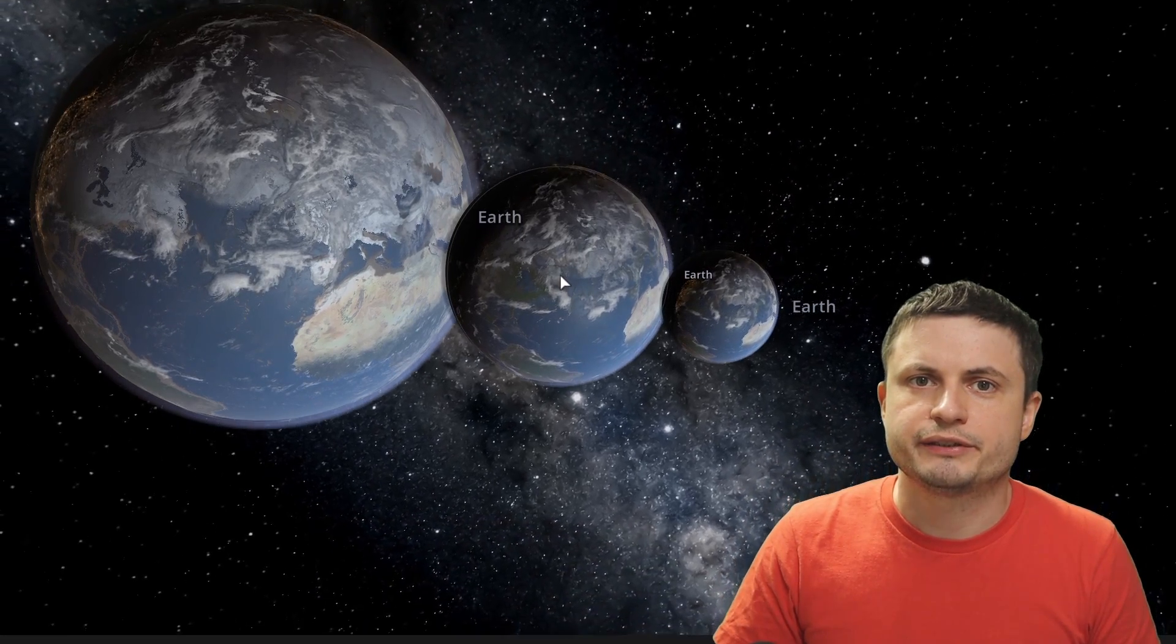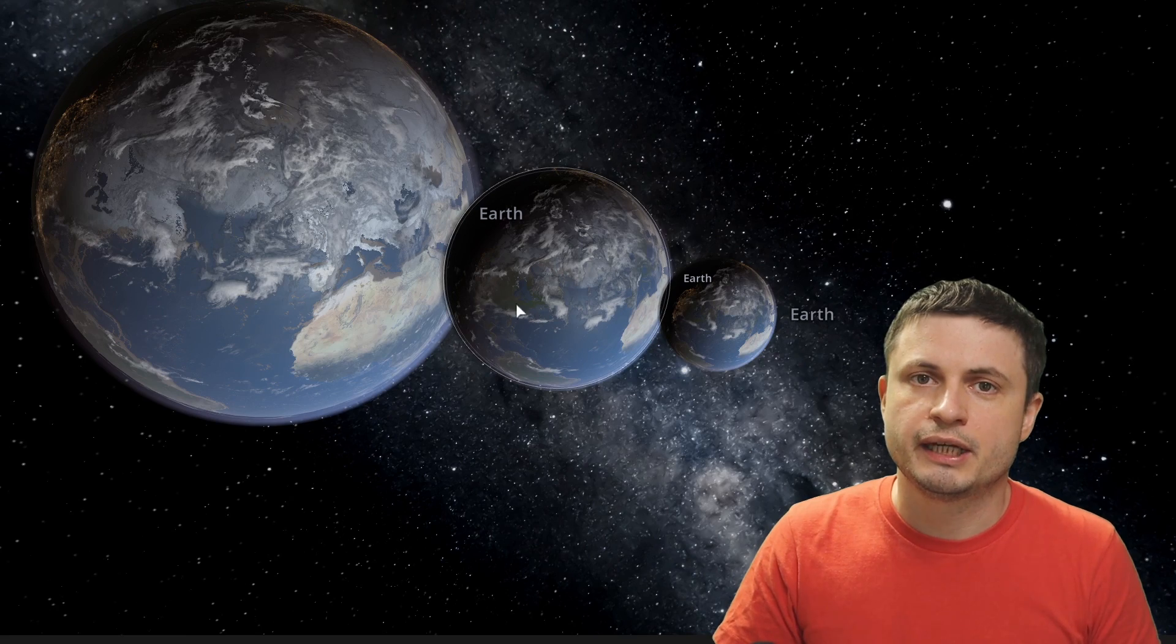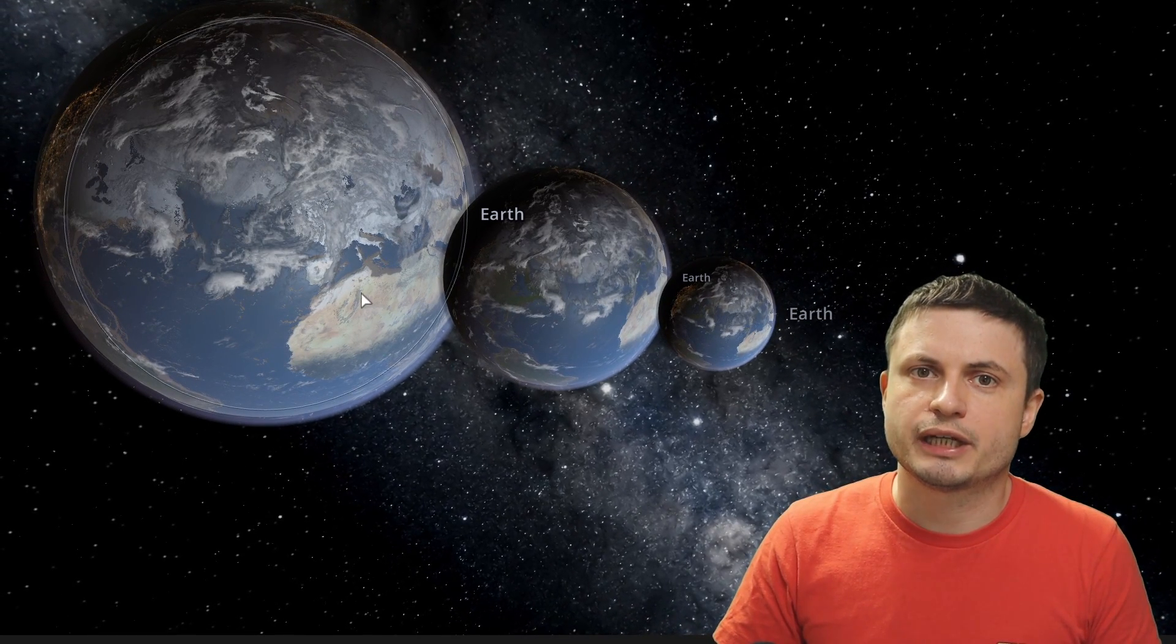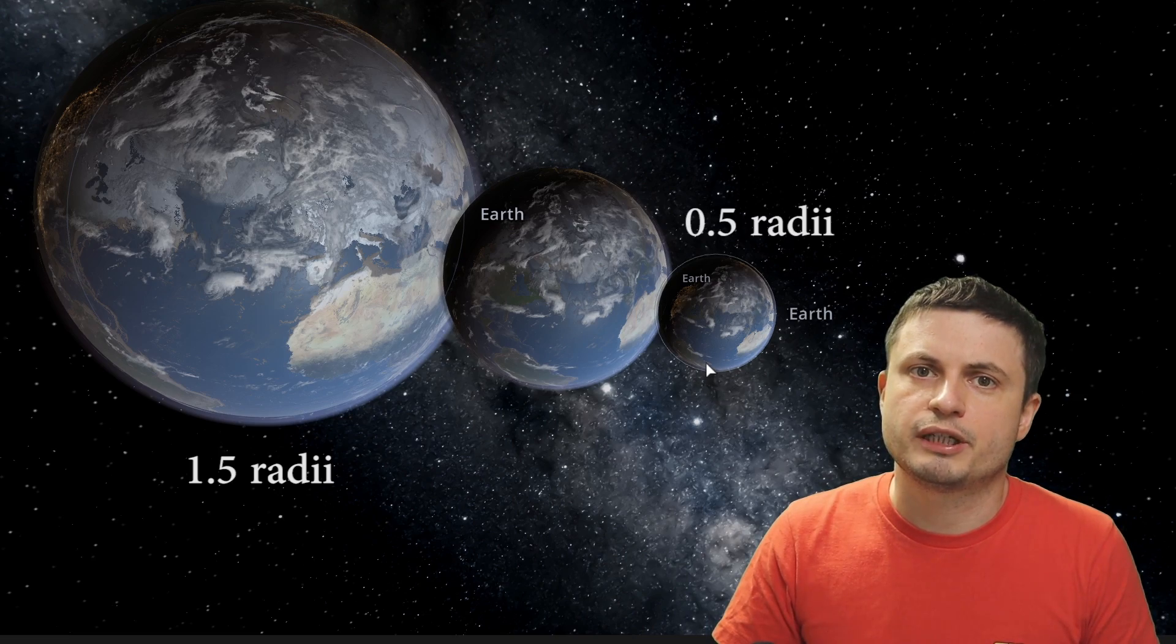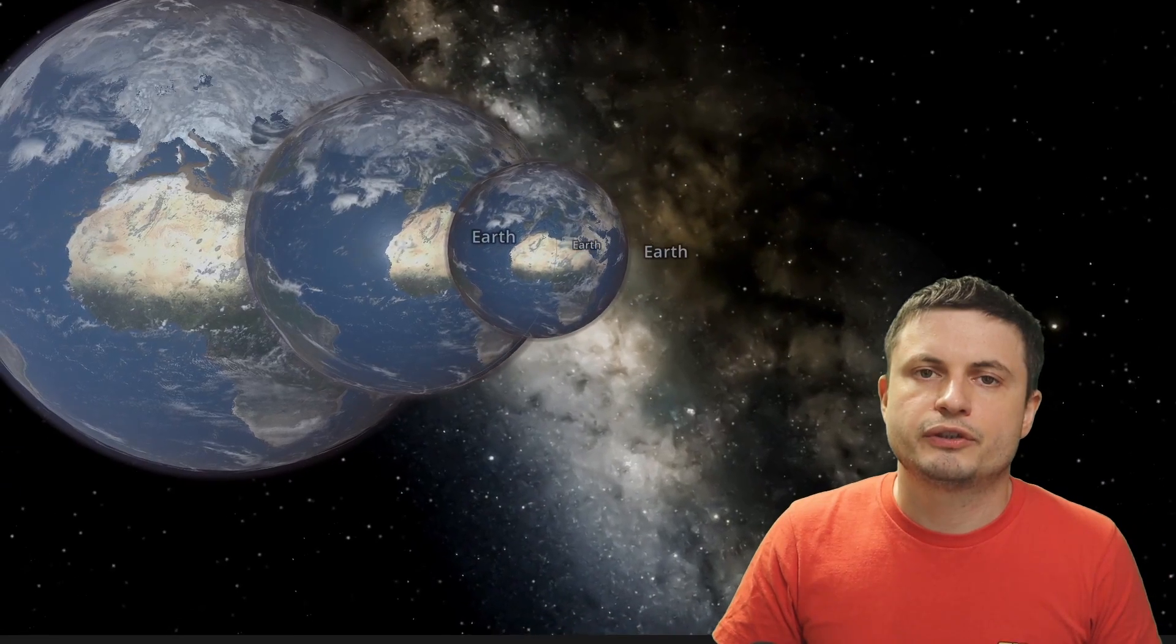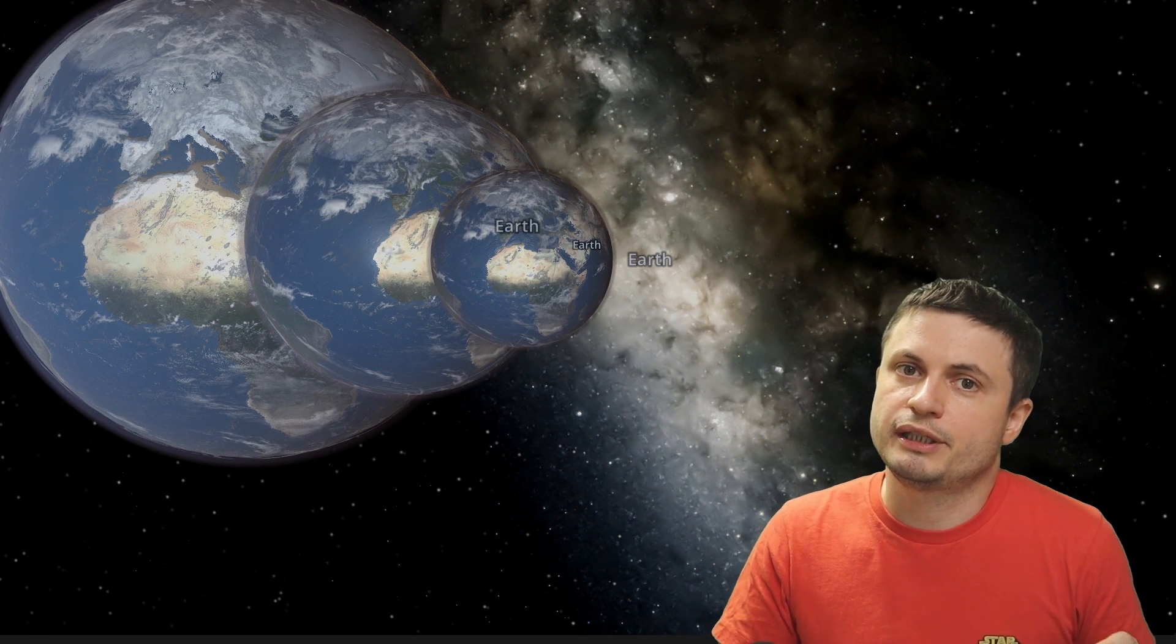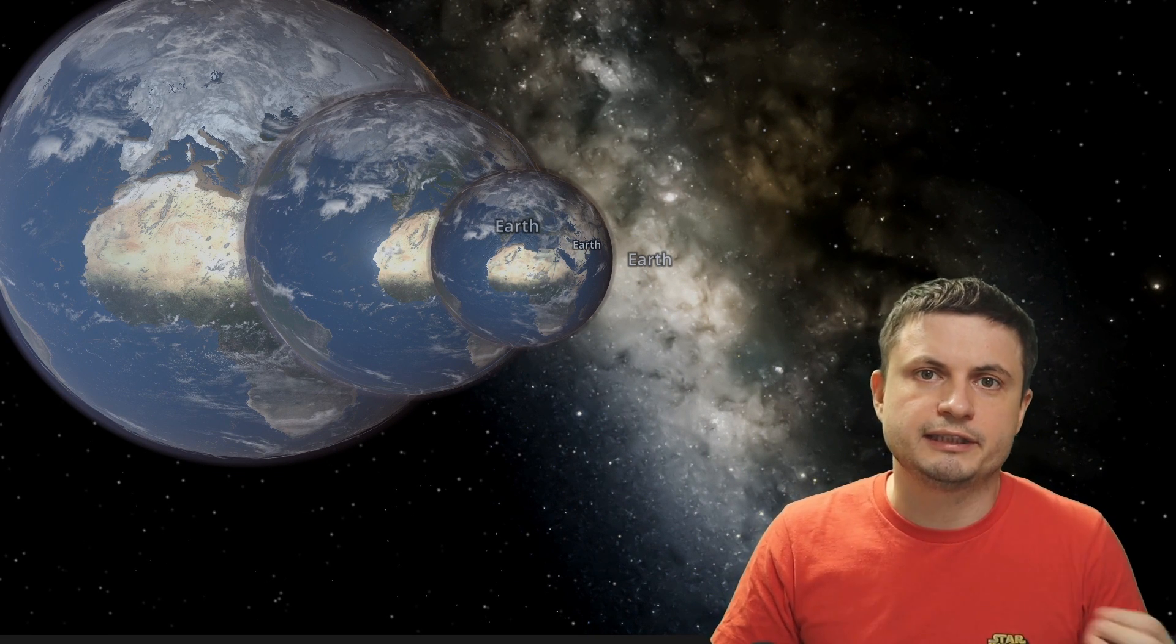And in terms of the planetary radius in comparison to planet Earth in the middle, the largest planets they've taken a look at were about double the radius of planet Earth, and the smallest were only about half the radius. Meaning that for their study they made an assumption that to be a habitable planet, the planet can only be only a little bit bigger or a little bit smaller than Earth.